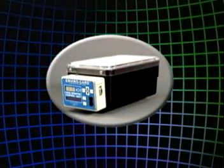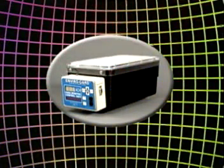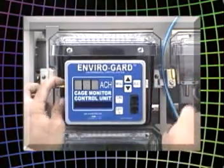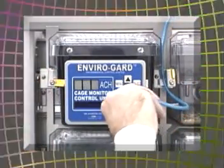Our EnviroGuard cage monitor control allows you to maintain and certify precisely what's going on inside your AllerZone micro isolator cages. Now you can certify the balanced airflow of your own ventilated racks and cages.